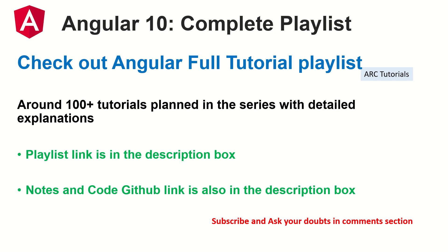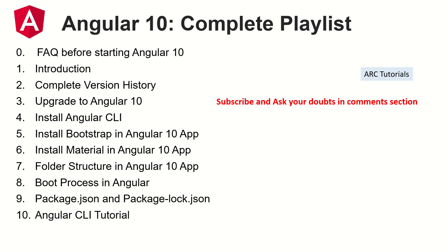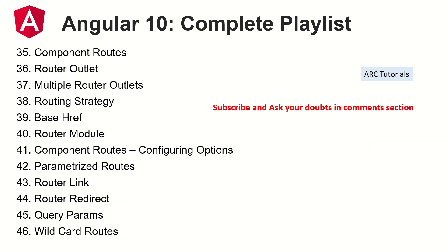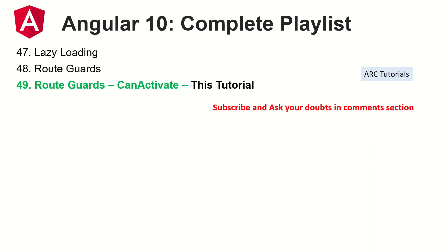As always, I welcome your queries and doubts in the comment section — please reach out to me, I'll try to help as much as I can. I know a lot of you are asking about topics that need more help; I promise I'll create those tutorials in time. The topics already covered are all available in the playlist link — around 48 episodes. This is the 49th, where we learn about route guards and the CanActivate interface.